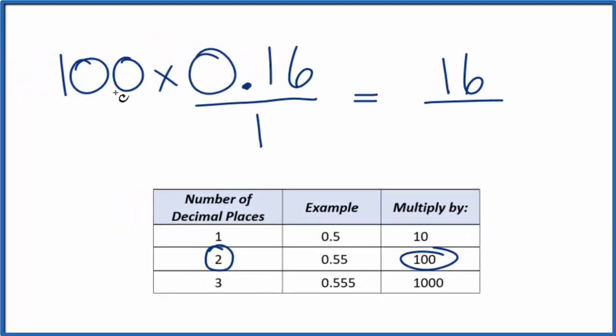But we can't just multiply 100 by 0.16 because that would change the quantity. We're trying to figure out the fraction form of 0.16, so they're equal. What we can do is multiply the whole by 100 over 100.